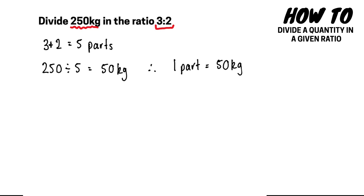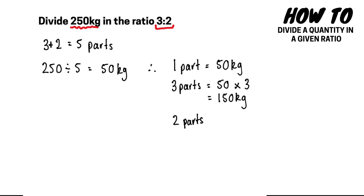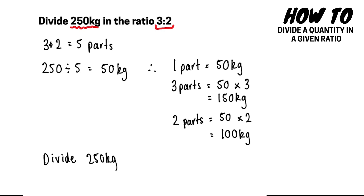Therefore, one part is equal to 50 kilograms. To work out how many parts are in the ratio 3 to 2, we calculate three parts by multiplying 50 by 3, so three parts equals 150 kilograms. Then we work out two parts by multiplying 50 by 2, which gives us 100 kilograms.